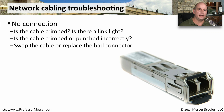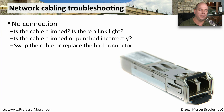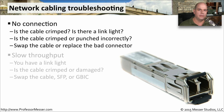If we're not connected at all, we need to look at the cable situation. Do we have a crimp in the cable? Is there a link light that we're able to see? Is it punched down incorrectly — do we have the wires in the wrong place inside the connector? This is especially common if it's a new installation. It might be worth swapping out all of the cables as a quick check to see if the problem resolves itself.